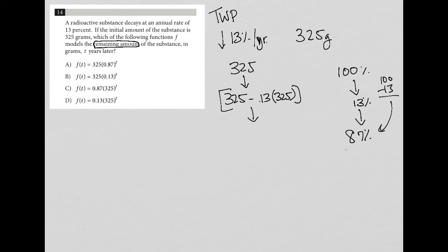anytime you have a percentage, you're going to write it as a decimal. So 87% as a decimal is 0.87. So the only answer choice that has 0.87 associated with the number of years that we are decaying is answer choice A.